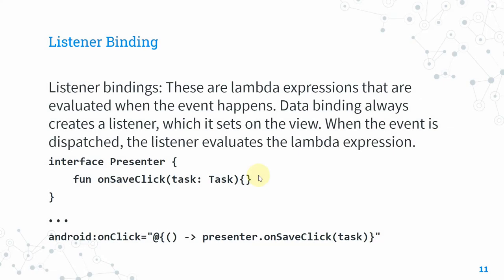There's also listener binding — lambda expressions evaluated when an event occurs. Data binding creates a listener set on the view, and when the event is dispatched the listener evaluates the lambda expression. You store listeners in the form of interfaces. For example, an interface named Presenter with a function onSaveClick, where you define the parameters you want.